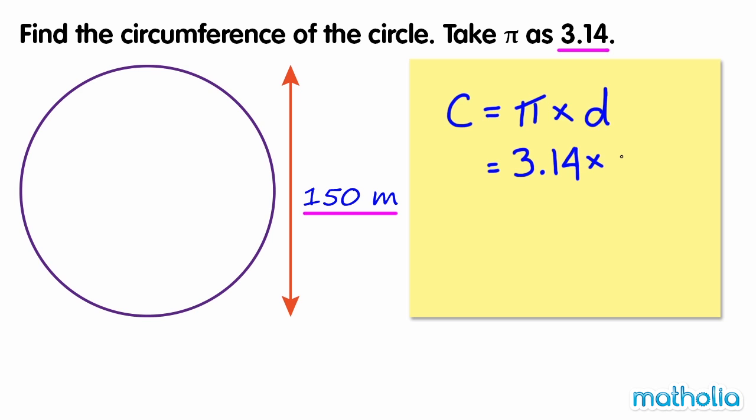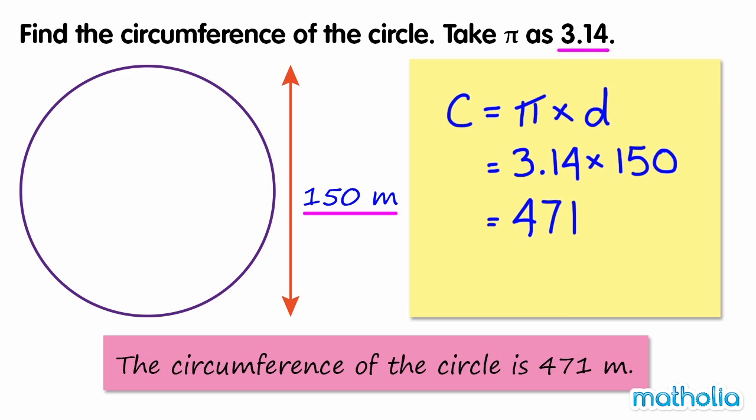3.14 times 150 equals 471. Our unit of length is m, so the circumference of the circle is 471 m.